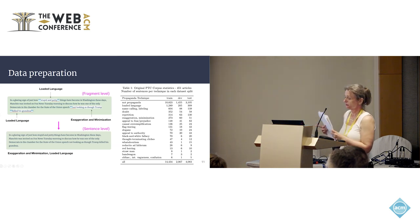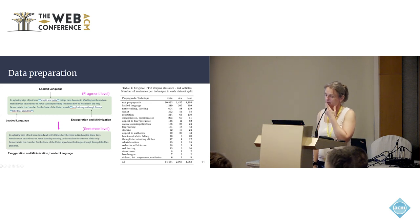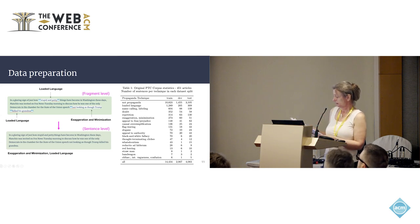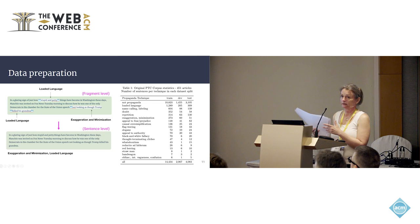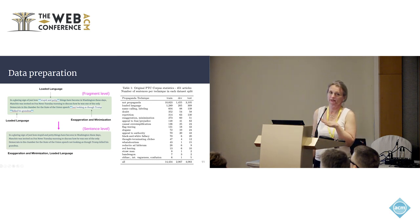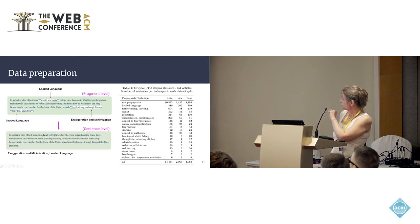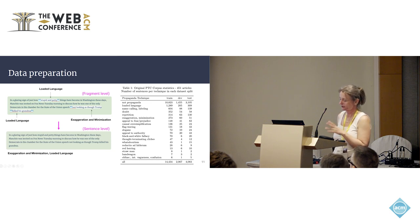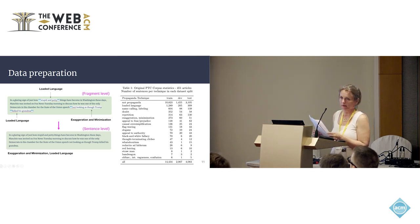The dataset is the Propaganda Technique Classification (PTC) corpus. There are 18 propaganda techniques — things like loaded language, doubt, exaggeration, and appeal to fear — and it consists of 451 articles annotated at the sentence fragment level. Because we're comparing to the state-of-the-art on technique detection, we remove the fragment-level information and leave the labels at the sentence level. So a sentence may have two labels, such as exaggeration/minimization and loaded language. There are about 20,000 sentences altogether.